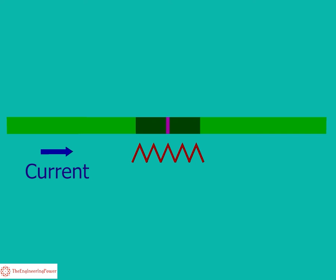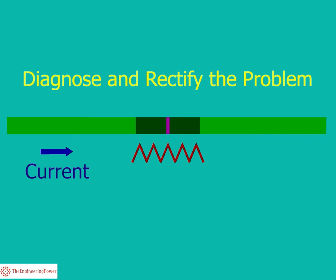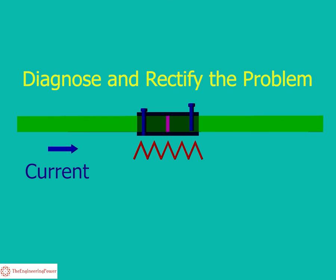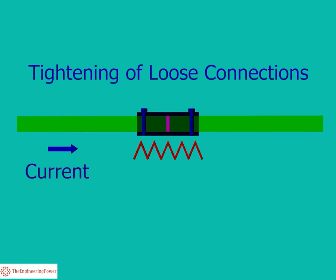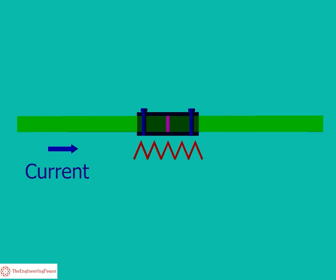Early identification of loose connection and corroded contacts helps us to diagnose and rectify the problem. We can carry out tightening of loose connections and other preventive maintenance on time to avoid any greater loss.